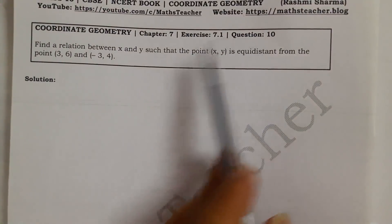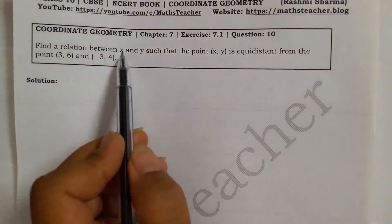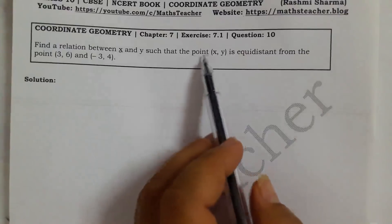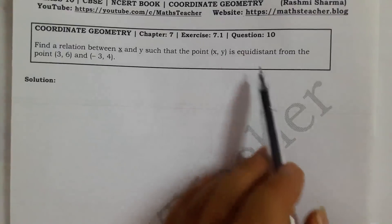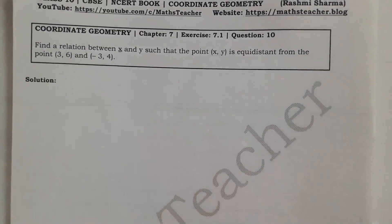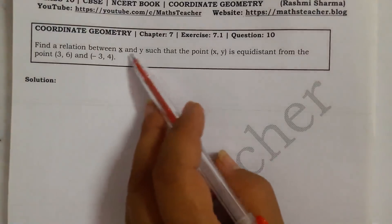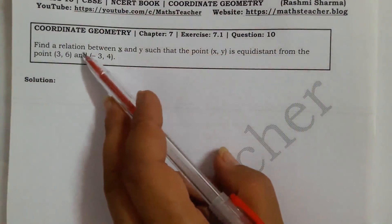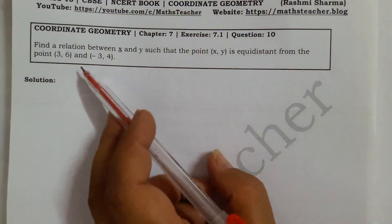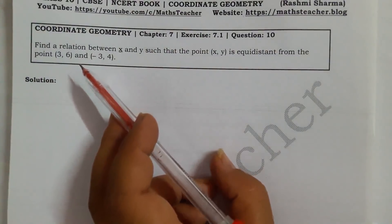The last question is exercise 7.1, question 10. We have to find the relation between x and y such that the point (x, y) is equidistant from the points (3, 6) and (-3, 4). We don't have to find x and y values; we have to make a relation, and that relation will be our solution.